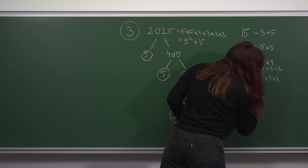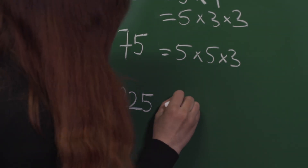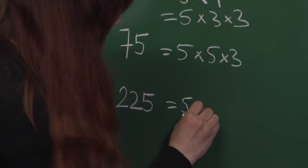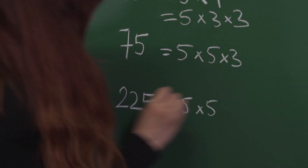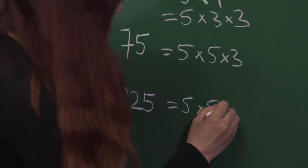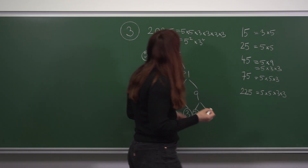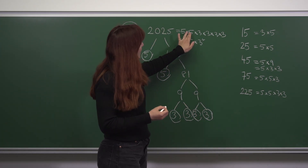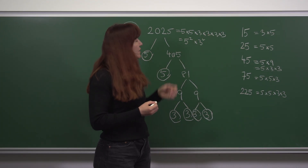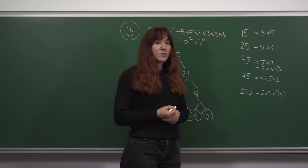And lastly our biggest number. It might take a bit to factorize, but 225 is 5 times 5 times 9, or 5 squared times 3 squared. Multiplying that by 3 squared gives us 2025. So 225 is also a factor.